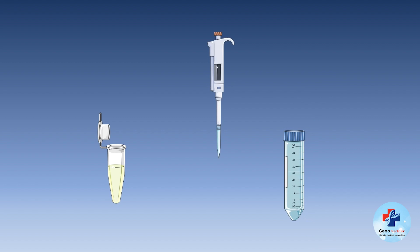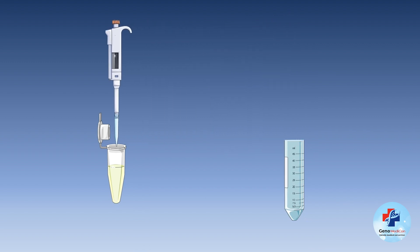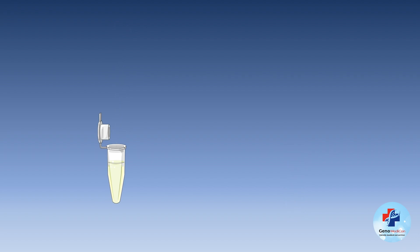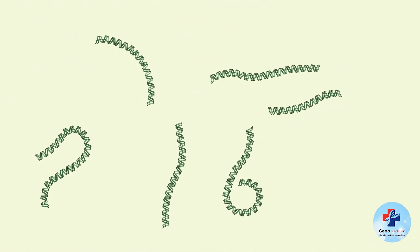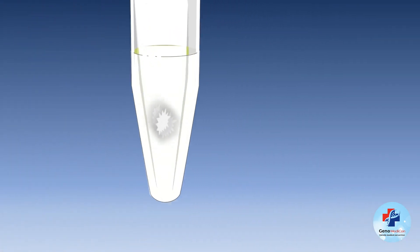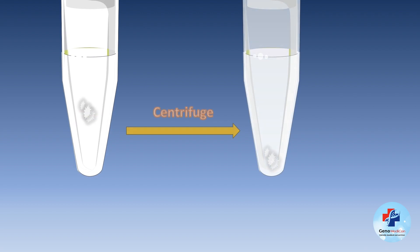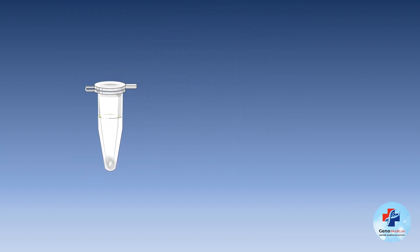This step involves the addition of alcohol, typically isopropanol or ethanol. This gradual increase in alcohol concentration induces a change in the solubility of DNA. As DNA molecules lose their solubility, they aggregate and precipitate out of the solution, forming a visible mass. The tube undergoes another round of centrifugation, further precipitating the DNA into a pellet. This step further separates the DNA from residual alcohol and other impurities present in the supernatant.